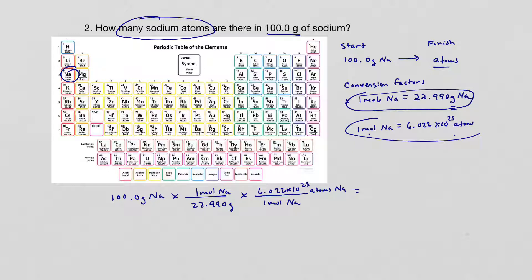And when I multiply, cross, and divide by what's on the bottom, I get a number that is 2.619. There's more digits, but I'm going to just go with four significant figures because 100 has four in it. So I multiply that by times 10 to the 24th, and it's atoms of sodium. And that's the answer.